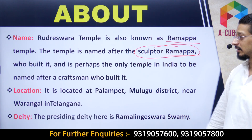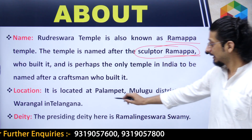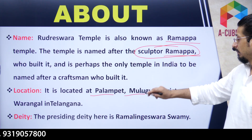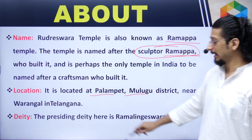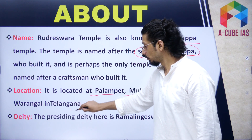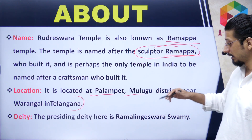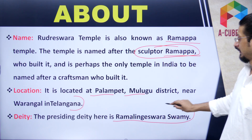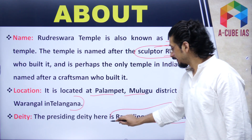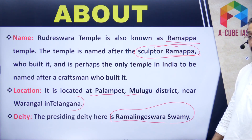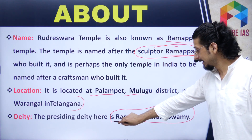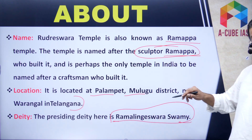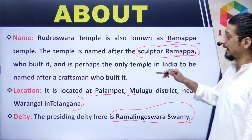Coming to the location, it is located at Palampet in Mulugu district, near Warangal in Telangana. The presiding deity is Ramalingeshwara Swami — so officially it is called Rudreshwara, and the presiding deity is Ramalingeshwara Swami.